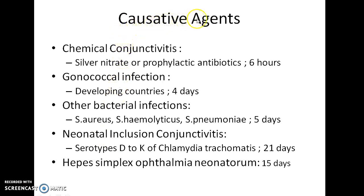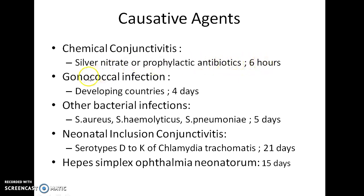What are the causative agents of Ophthalmia Neonatorum? It can be caused by chemicals such as silver nitrate or prophylactic antibiotics. The incubation period in this case is usually 6 hours.